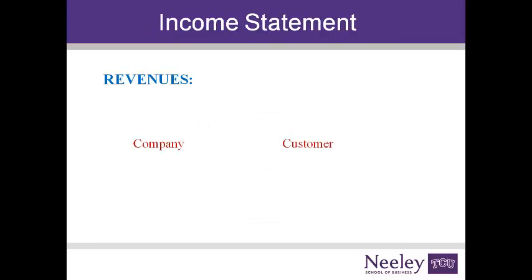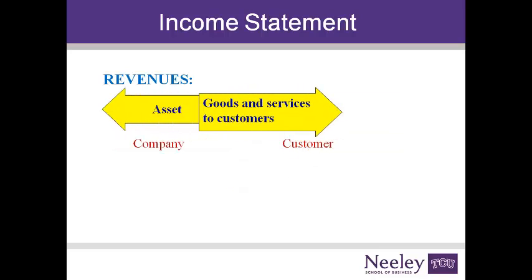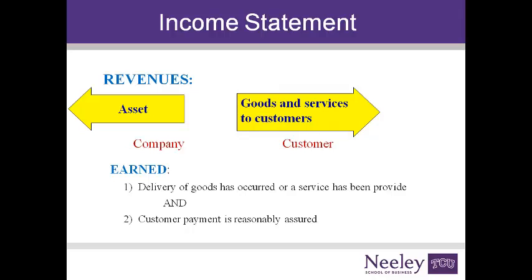The income statement begins with revenues. A revenue occurs when a company provides goods or services to customers in exchange for an asset, typically cash, either now or in the future. Revenues are considered earned when the goods or services have been provided to customers, nothing more is owed to the customer, and the company reasonably believes the customer will pay. Revenues are not reported because cash is received; the income statement does not report cash exchanges.